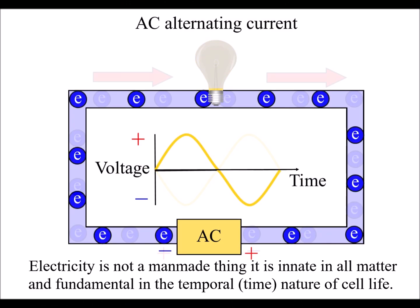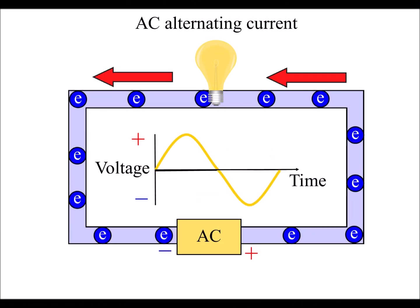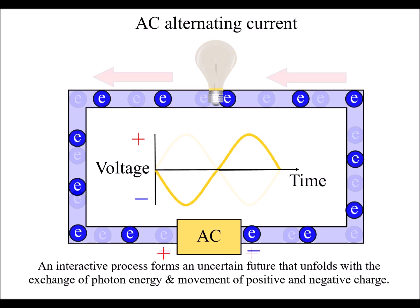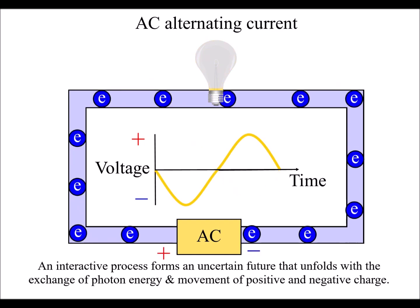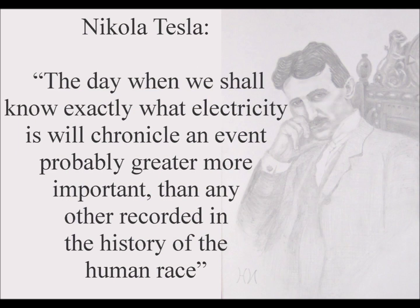Photons form the movement of electric current, therefore we can turn the process around. And just by moving electric current backwards and forwards, we can create photon energy with the potential to do work.